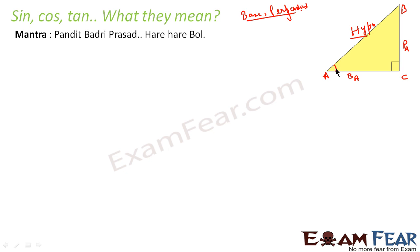Please understand this: if angle A is the frame of reference, the side opposite to angle A is called perpendicular and the side adjacent is called the base for angle A. Similarly, if I take angle B as the reference, then the side opposite to angle B will be the perpendicular and the side included with it will be the base. So hypotenuse is constant — there is no change in hypotenuse.